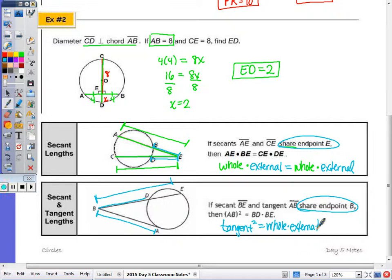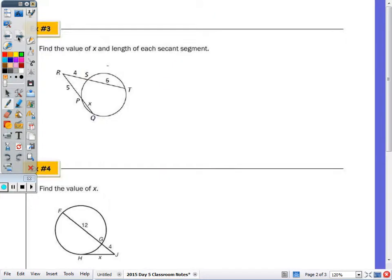So if I have a secant, I see that whole times external. Two secants, whole times external, whole times external. So when it comes to these theorems, I memorize that if I have two secants intersecting outside of a circle, they share the same endpoint, then the theorem is whole times external equals whole times external. When I have a secant and a tangent, it's tangent squared equals whole times external. So on the back, let's see what we have.